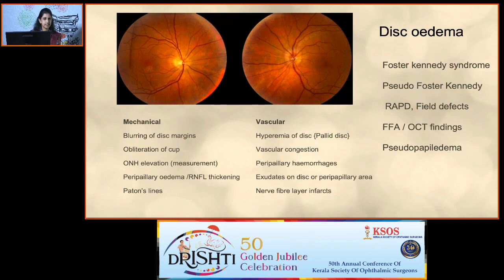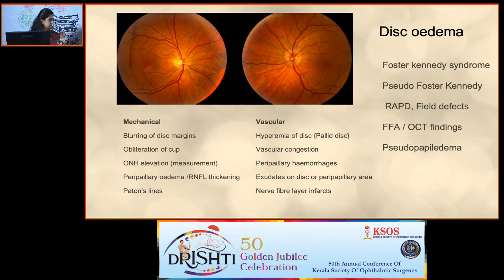In disc edema, here is a case of unilateral disc edema in the left eye — slight, but with blurring of margins. In any case of disc edema, think of the 10 signs described for papilledema — mechanical and vascular factors — and mention each. Know Foster Kennedy syndrome, pseudo-Foster Kennedy syndrome, measurement and grading of RAPD, field effects, FFA and OCT findings for each cause of disc edema whether unilateral or bilateral, and causes of pseudo-papilledema and how to rule them out.